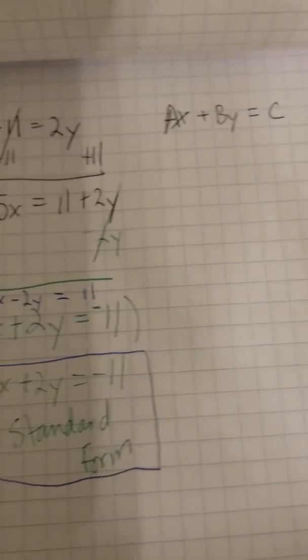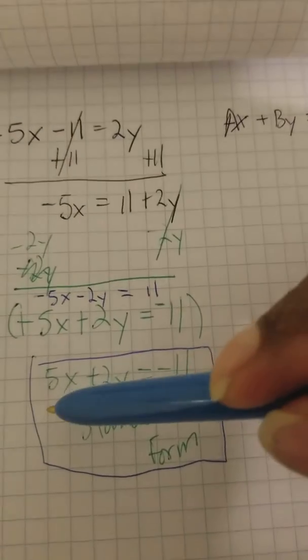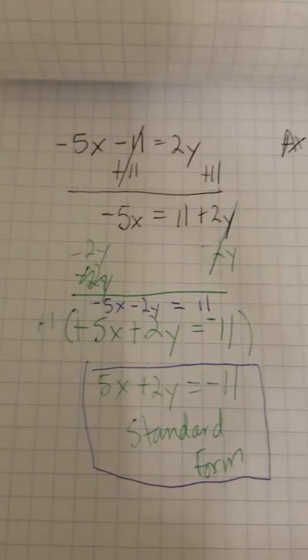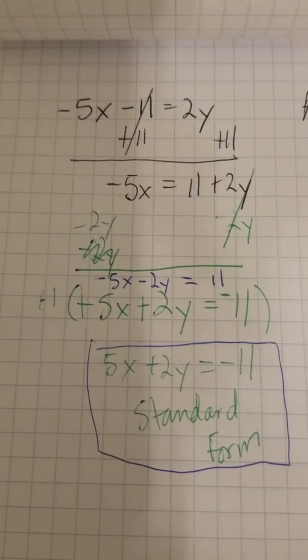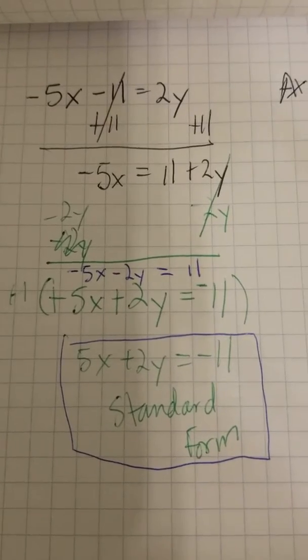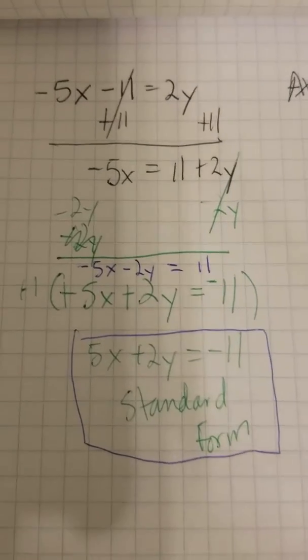And now it's in standard form, as you can see. This would be AX plus BY equals C. If you have questions, email me. Have a good rest of the spring break. Hopefully, you're doing your homework. I'm sure that's all of you, right? All right.